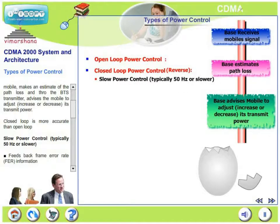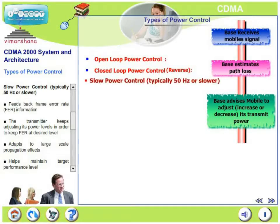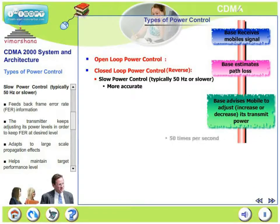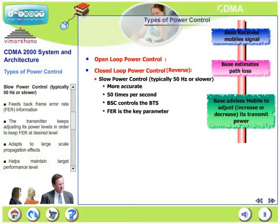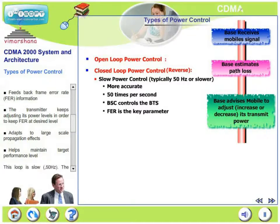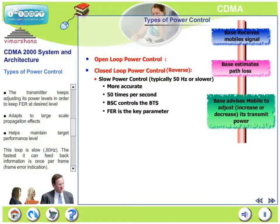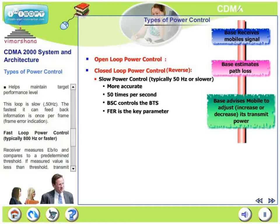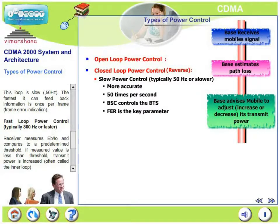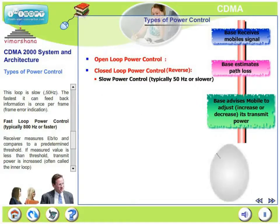There are two variations of closed loop power control. Slow power control — typically 50 cycles or slower — is based on feedback of frame error rate performance. If frame error rates are quite low at the base station controller, the signal quality is excellent, and therefore the mobile is asked to reduce its power. Conversely, if the frame error rate is very poor, signal quality is bad and the mobile should increase its transmit power. The transmitter keeps adjusting its power levels to keep frame error rate at a desired level. This adapts to large-scale propagation effects and helps maintain the performance target. The fastest it can feedback information is once per frame — that is, one frame error indication per frame.